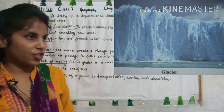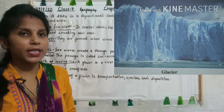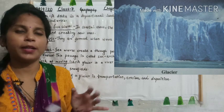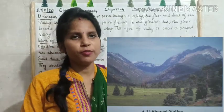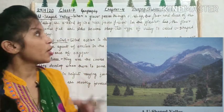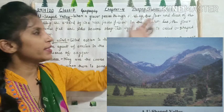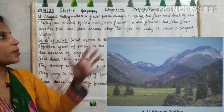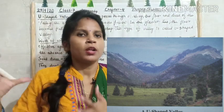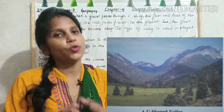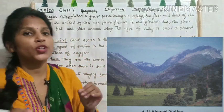The work done by moving ice or a glacier involves: first, erosion — it erodes the rocky surface; second, transportation — it transports the eroded materials; and third, deposition — it deposits those materials. A U-shaped valley is formed by the action of moving snow or glacier. When a glacier passes through a valley, the floor and the sides of the valley get eroded by the rock pieces present in the glacier. The floor becomes flat and the sides become steep, pointed, and crooked, thus forming a U-shaped valley.